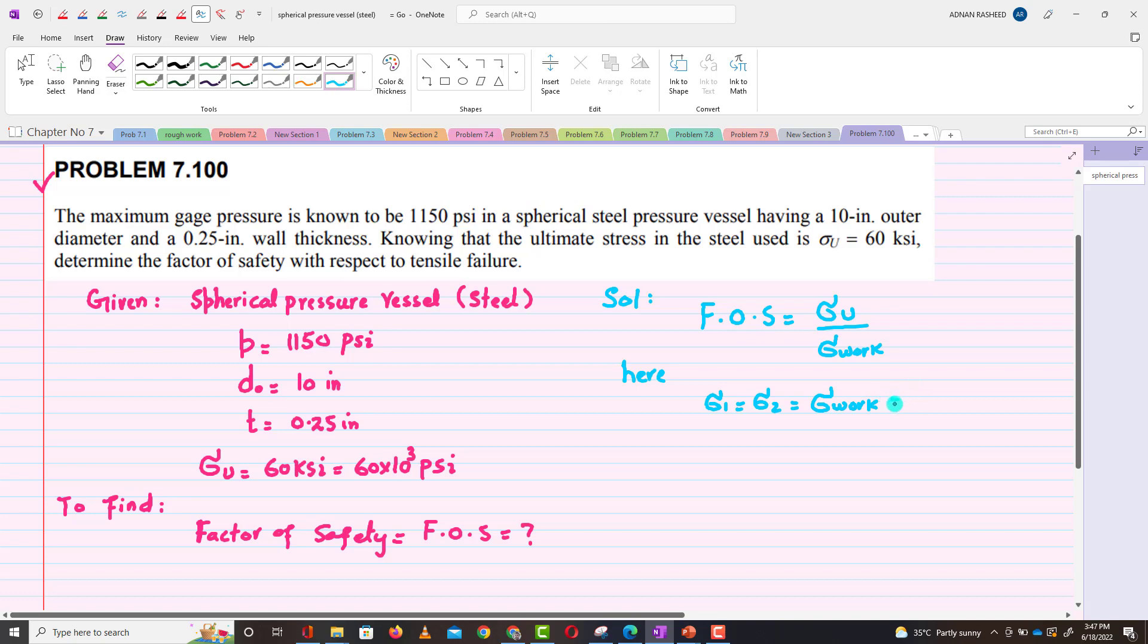And this σ₁ = σ₂ = P·r / (2t). Now what is r?